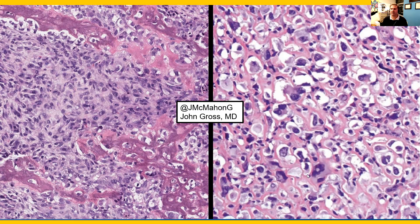At higher power on the right, we have anaplastic tumor cells that are variably pleomorphic, which directly produce this mineralized osteoid matrix, which is very fine, wispy, and lace-like.